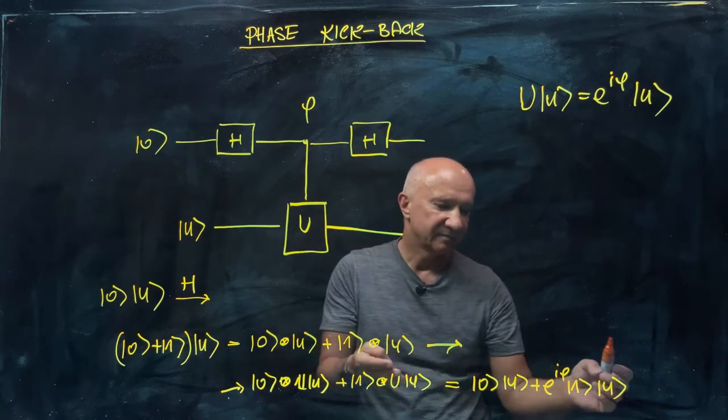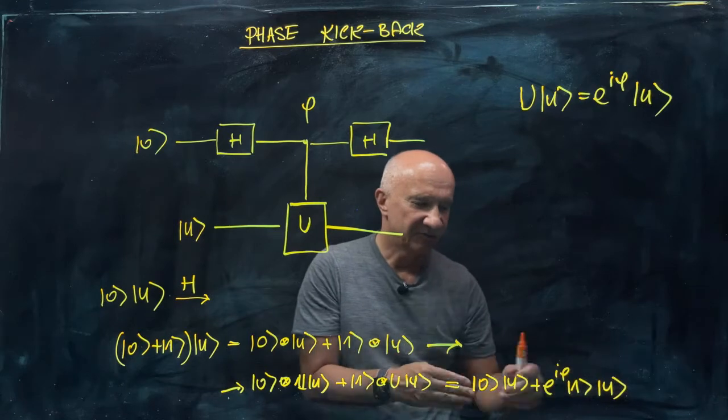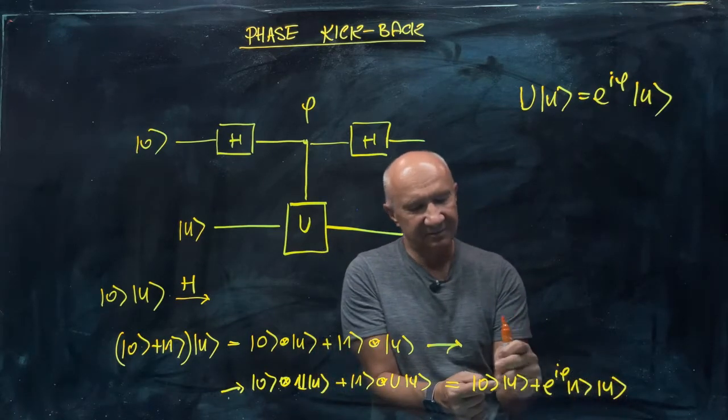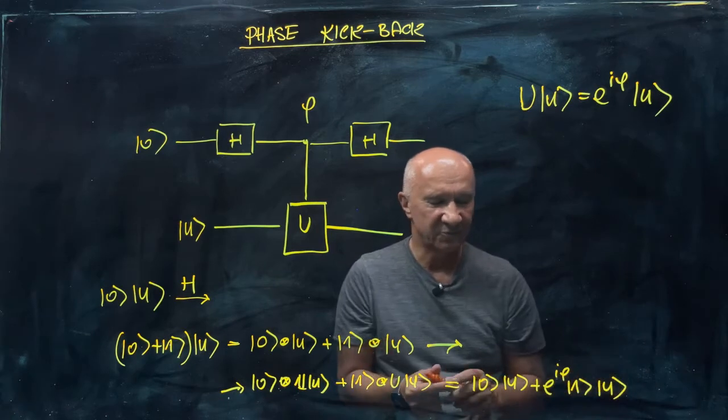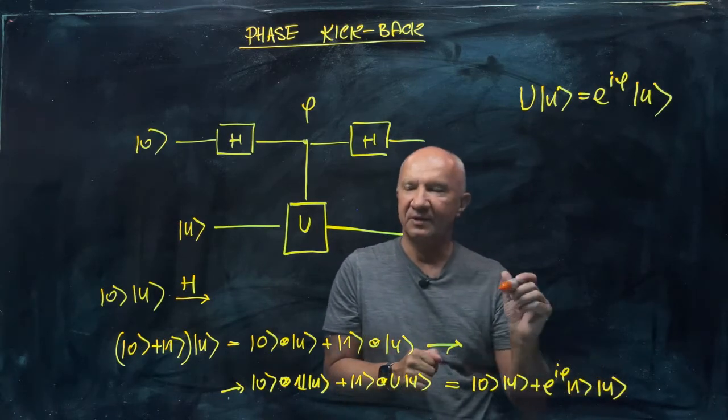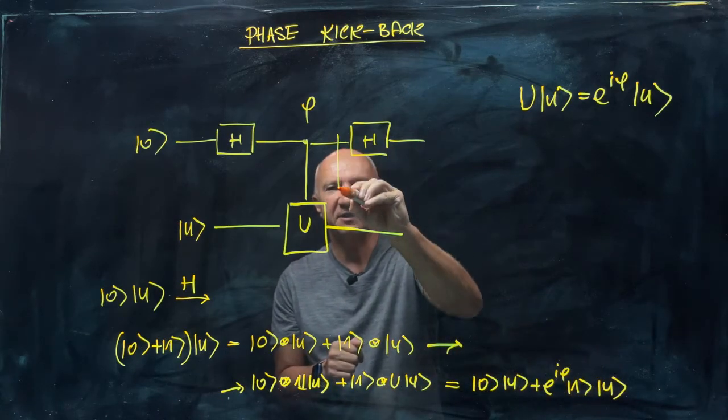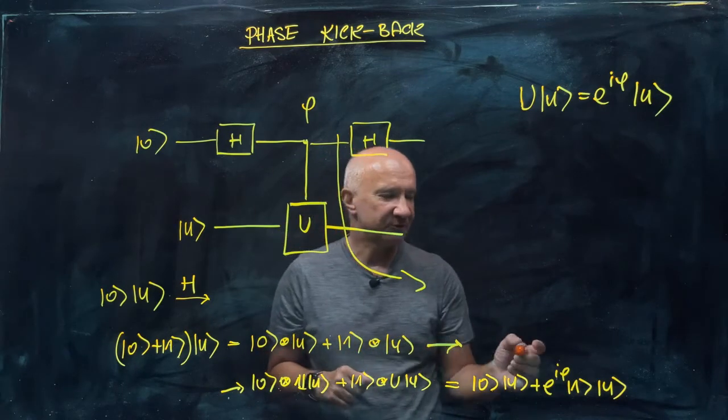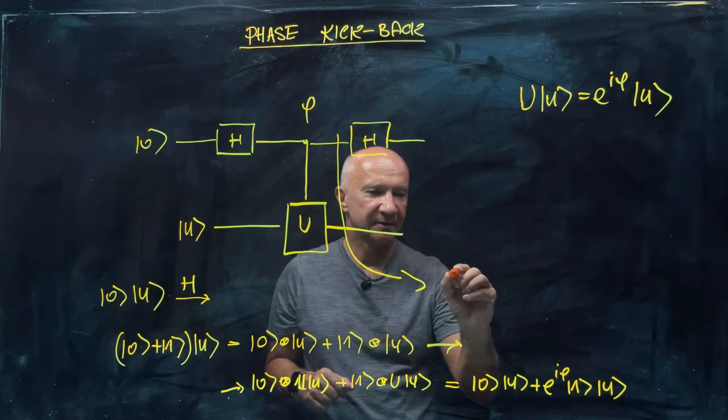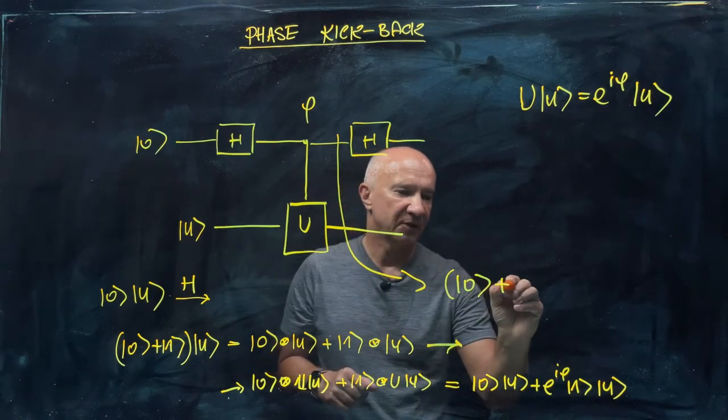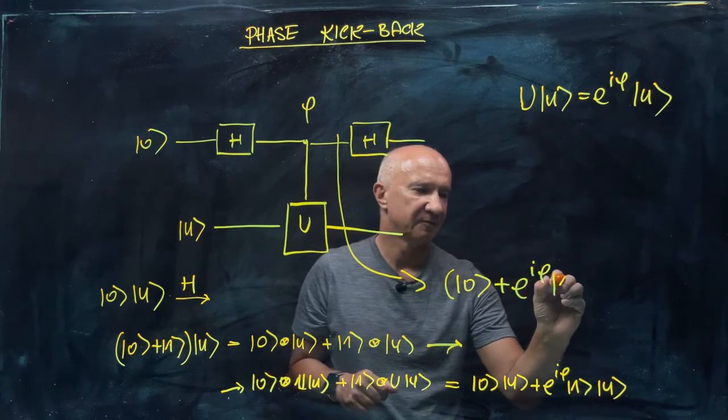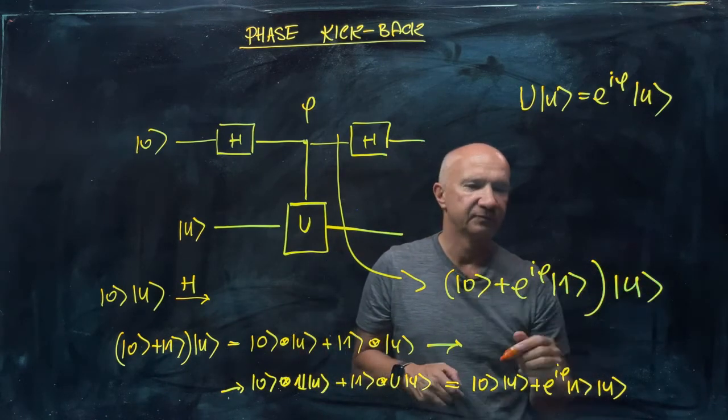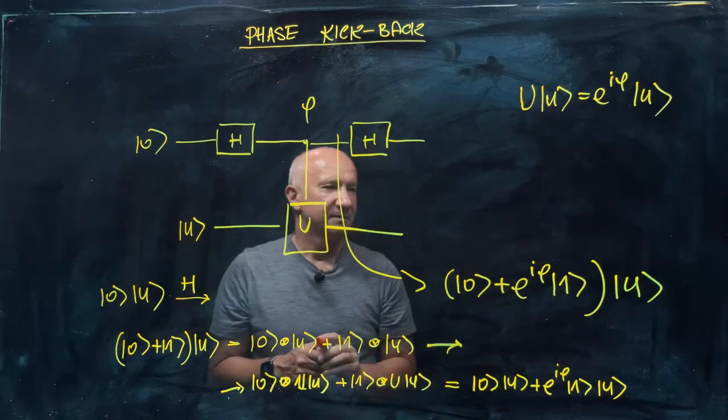Now, I can factor out the vector, the U from the second qubit. So you can see that the state right here after the controlled U operation is going to be zero plus e to the i phi one tensor U.